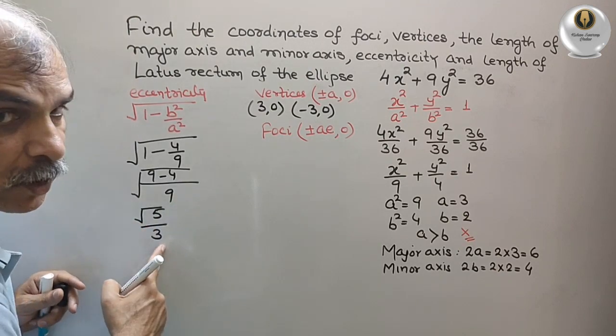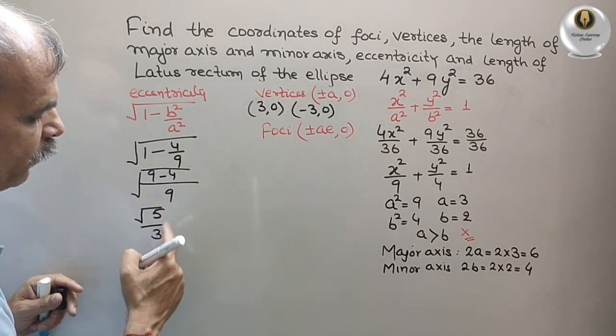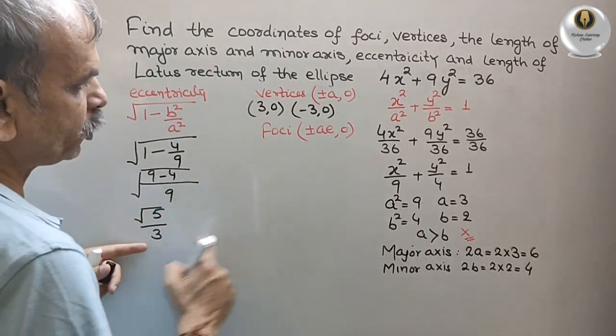So this is equal to, we can say is √5/3. 9 is the perfect square of 3. So √5/3 is our eccentricity. Now substitute this value here.